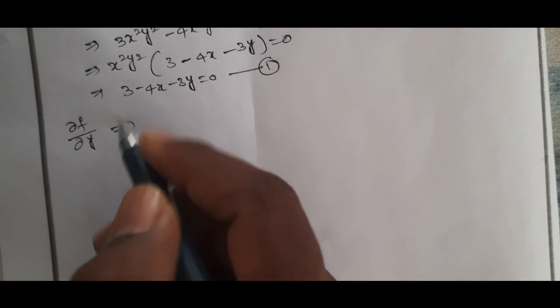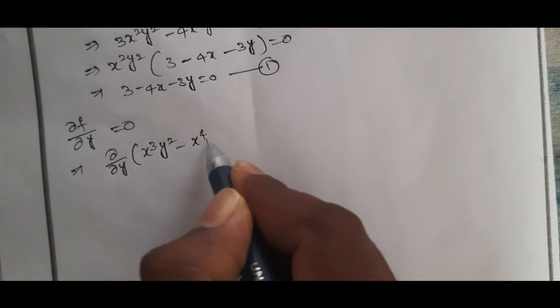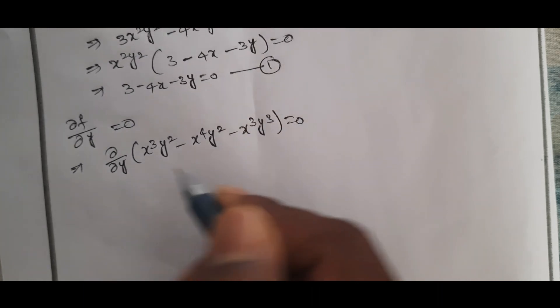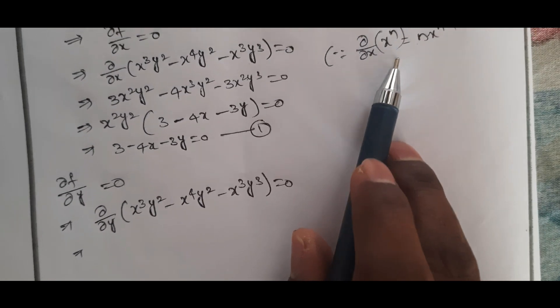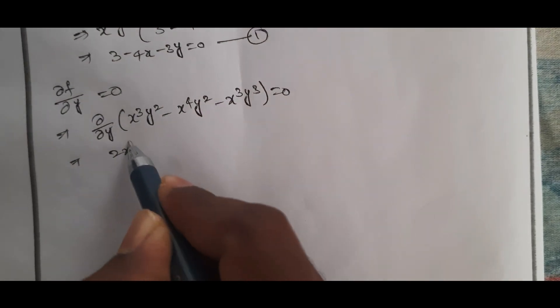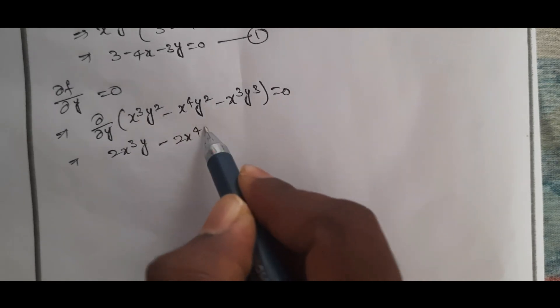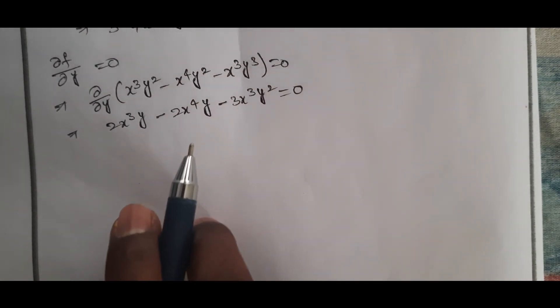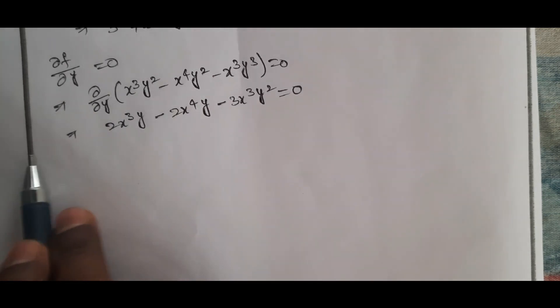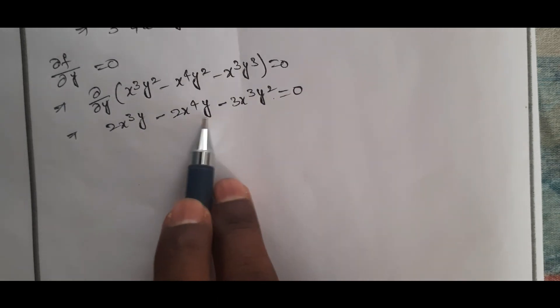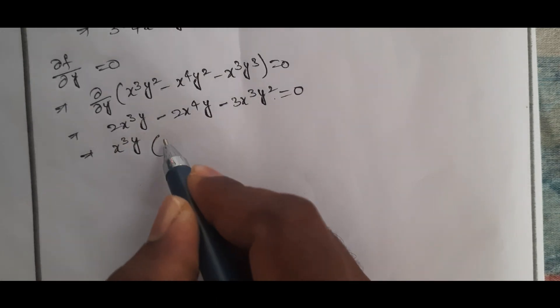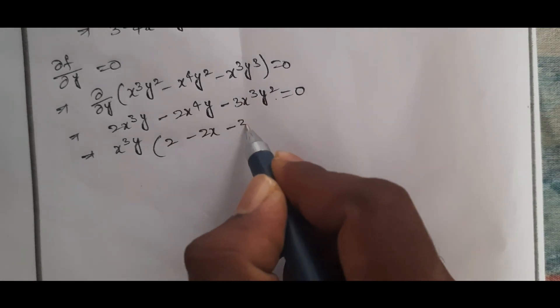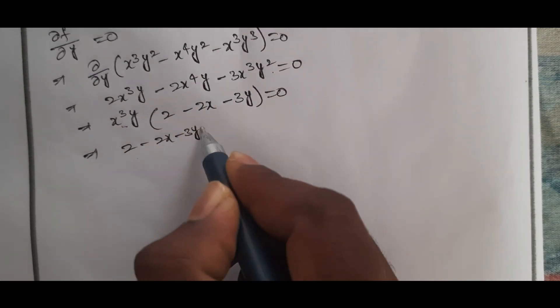Next, we compute ∂f/∂y = 0. The expression gives x³y² - x⁴y² - x³y³ = 0. Taking x³ and y as common factors, the bracket gives: 2 - 2x - 3y = 0. This is equation number 2.